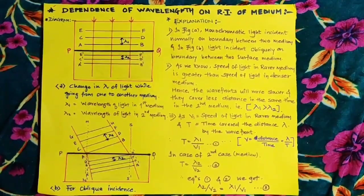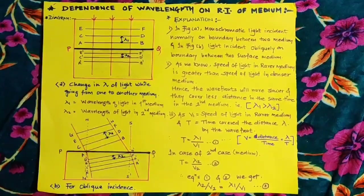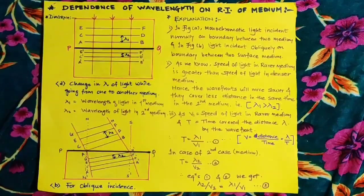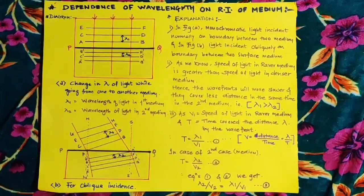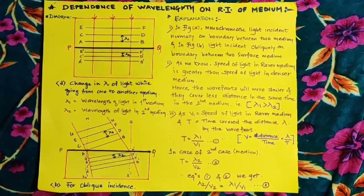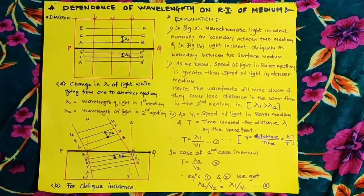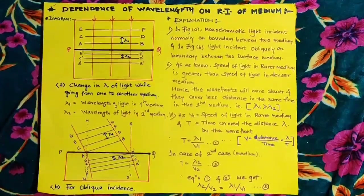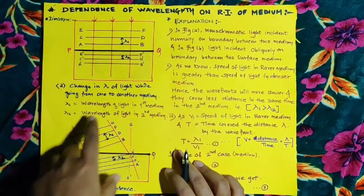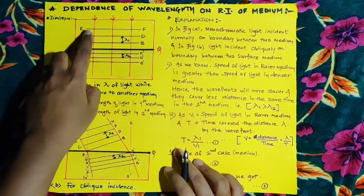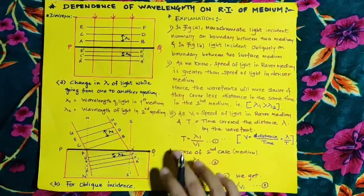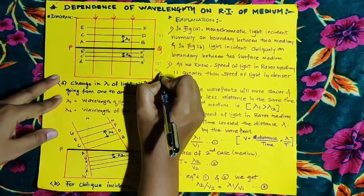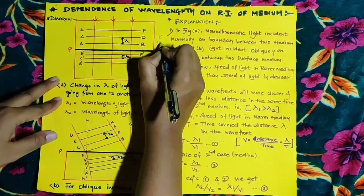Two cases are considered. In the first case, monochromatic light is incident normally on a boundary between two media, shown by PQ. In the second case, the same monochromatic light is incident obliquely on the boundary between two media. Two mediums are considered: medium 1 (rarer or air medium) and medium 2 (denser medium), as shown in the first diagram.